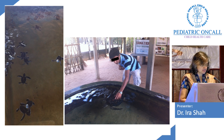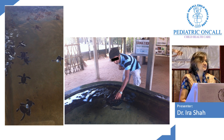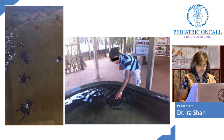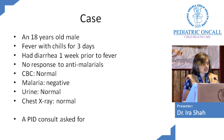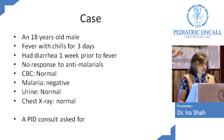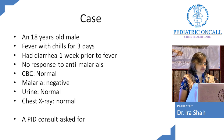A lot of travel infections are also zoonoses. Here's a case: an 18-year-old boy came with fever and chills for three days, had diarrhea one week prior to the fever, with no response to anti-malarials. A hemogram, peripheral smear for MP, urine, and chest X-ray were all done — everything was normal, but the fever with chills was not going. So a pediatric infectious disease consult was taken.